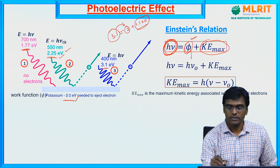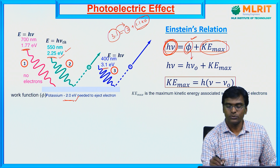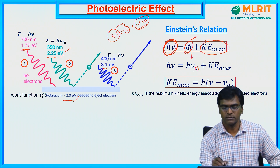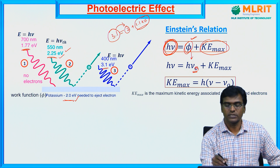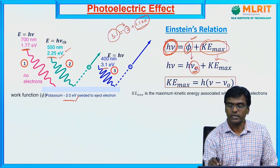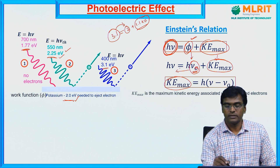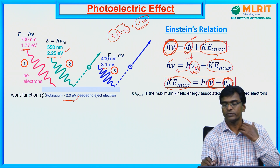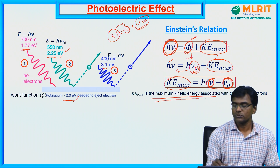As seen in previous lectures, the work function is hν₀ or hν_th, where ν₀ or ν_th represents the threshold or minimum frequency. So: hν = hν₀ + KE. Rearranging and taking h as common, we get KE = h(ν − ν₀), where ν is the incident photon frequency and ν₀ is the threshold frequency of the metal surface. K is the kinetic energy associated with the ejected electrons.